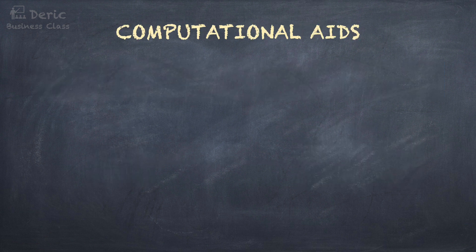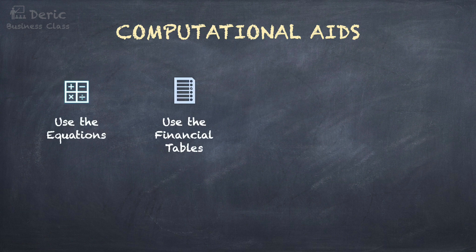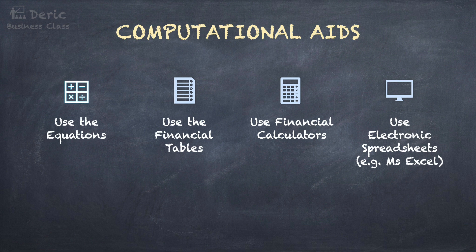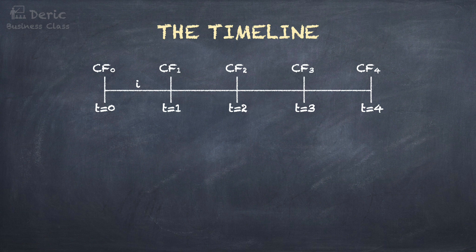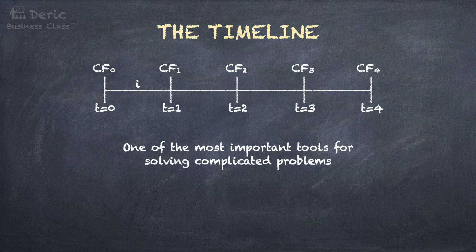For the calculation of time value of money, there are four computational aids. First, by using equations. Second, by using financial tables. Third, by using a financial calculator. Fourth, by using electronic spreadsheets, such as Microsoft Excel. Make sure you know how to draw the timeline. CF is the cash flow. T means time, usually in years or months. I is the interest rate. The timeline is one of the most important tools for solving complicated problems.